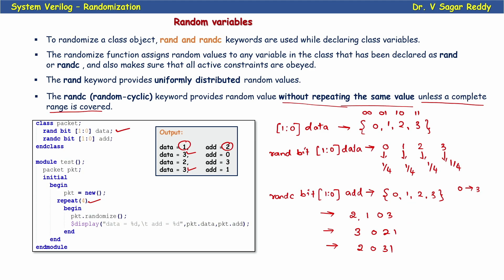In this video, we discussed how to declare a variable as a random variable using the rand and randc keywords, and what the basic difference between rand and randc is, with a suitable example.